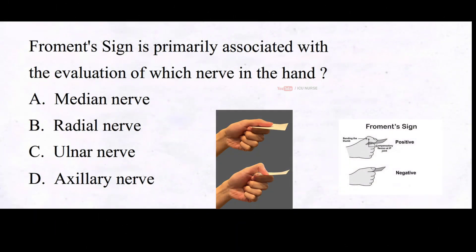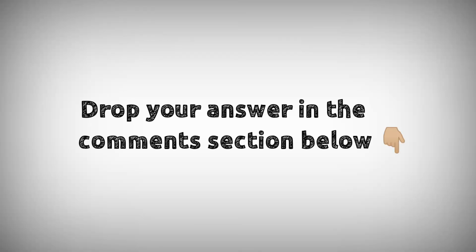Froment's sign is primarily associated with the evaluation of which nerve in the hand? A. Median nerve. B. Radial nerve. C. Ulnar nerve. D. Axillary nerve. Drop your answers in the comment section below. For downloading PDF content and for the latest updates, follow our Telegram channel — the link is given in the description below.